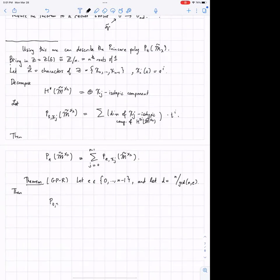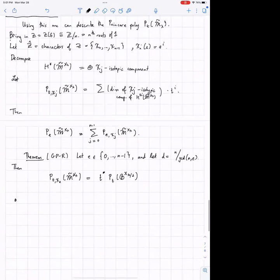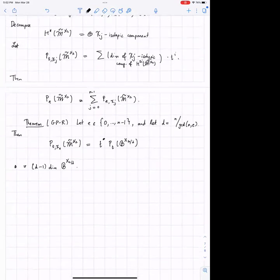So then the Poincaré polynomial of the chi E isotypic component, it's actually a power of T to some power here times the Poincaré polynomial of just the Springer fiber, where I take the partition and I divide it by D. And this power here, the exponent is actually D minus one times the dimension of B of X lambda over B. So what's happening here is that in this cohomology, you're actually seeing the cohomology of these smaller Springer fibers sitting as the isotypic components in there. And so I'm out of time.